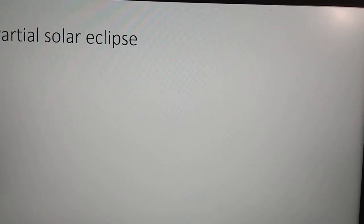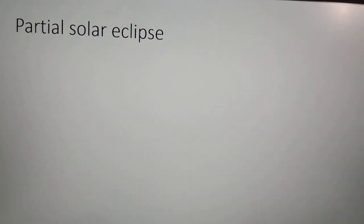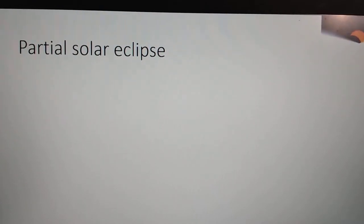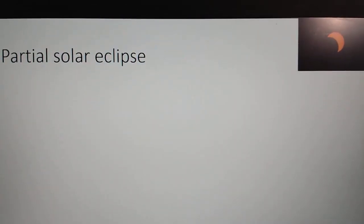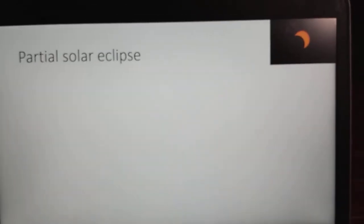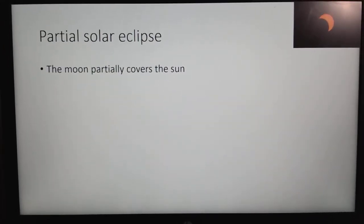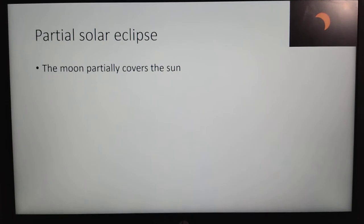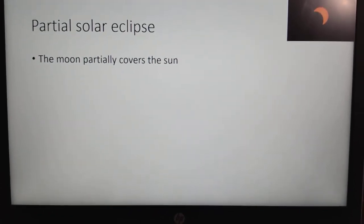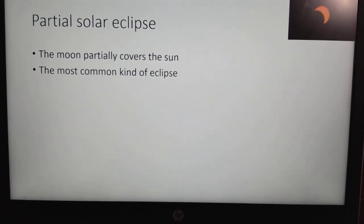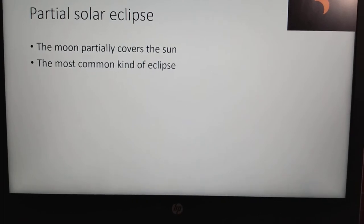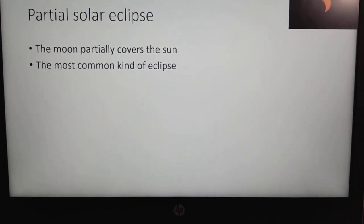The first one is a partial eclipse, and there's one up in the corner. This one is pretty self-explanatory. It's where the moon only covers a part of the sun. It is the most common kind of eclipse. What do I mean by that?